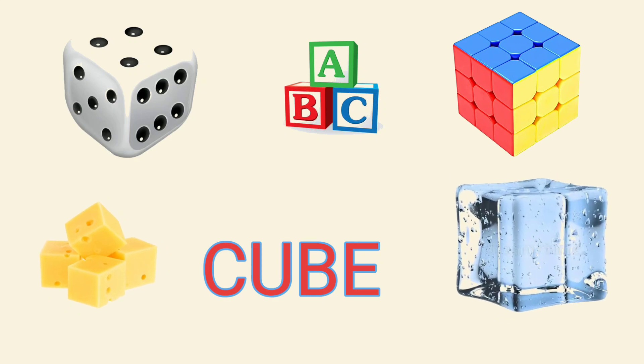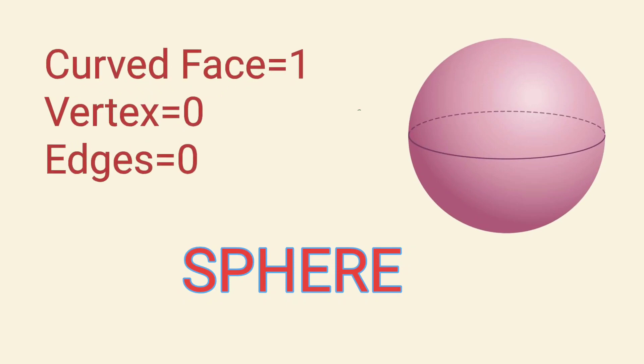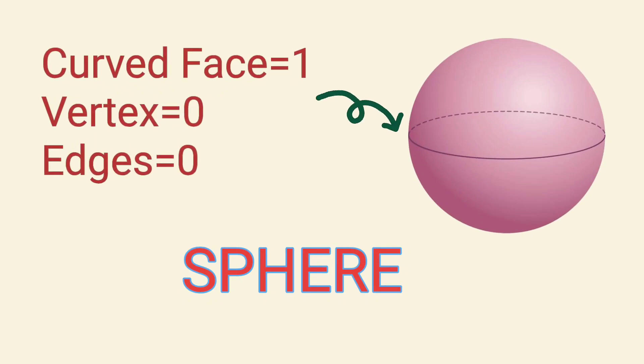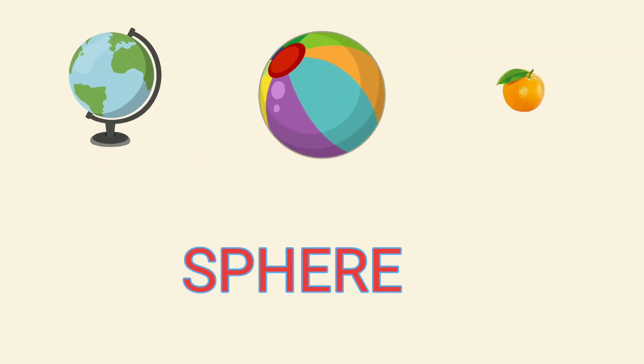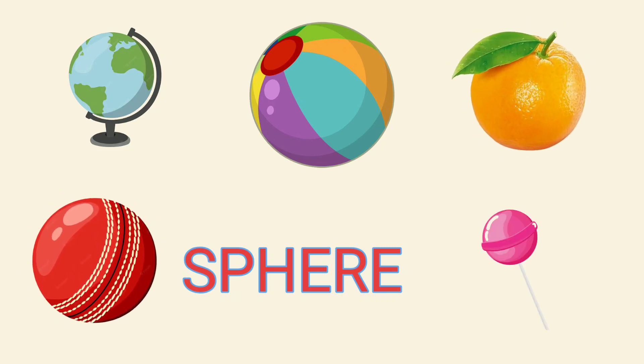More cube examples include cheese blocks and ice cubes. Sphere: A sphere has one curved face, zero vertices, and zero edges. Examples include globes, balls, oranges, and cricket balls.